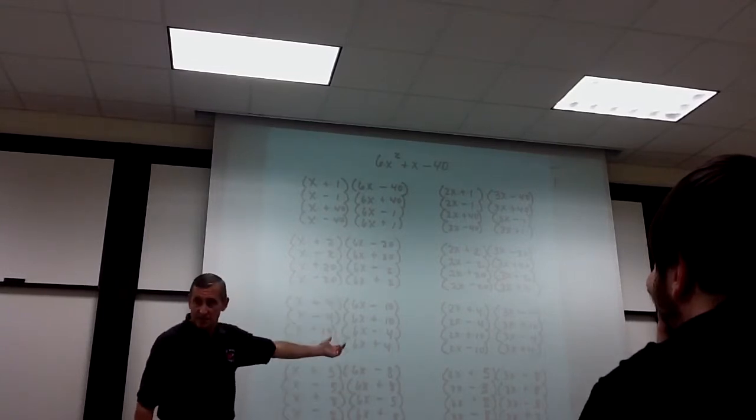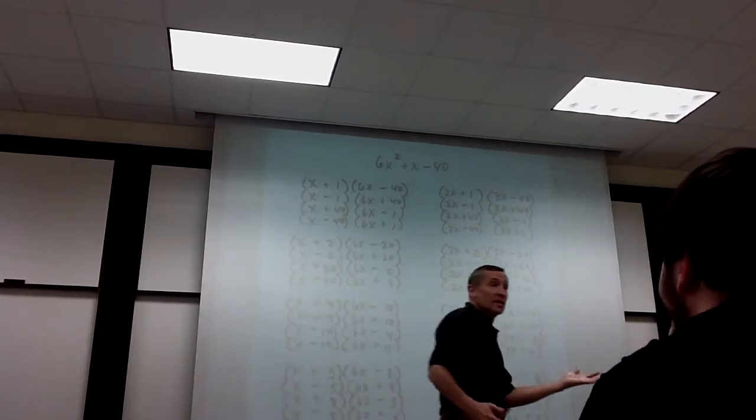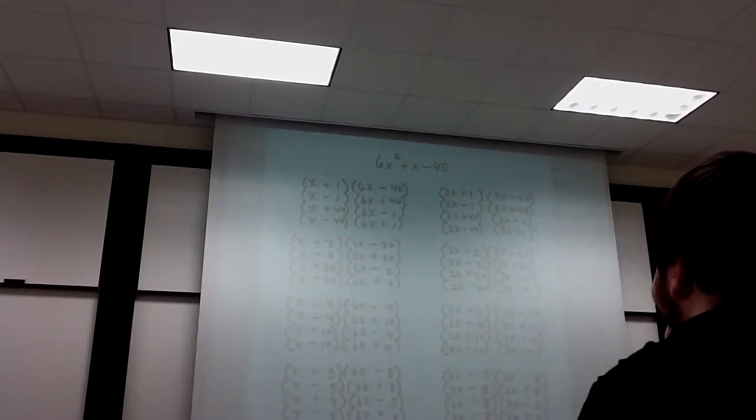There's 32 possibilities here. On a bad day, I could try 31 times before I got to the right answer. Or if the thing happens to be prime, I could try all 32 before I get to the right answer.